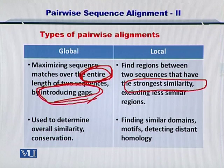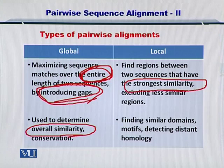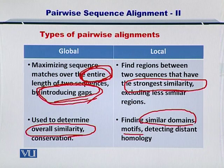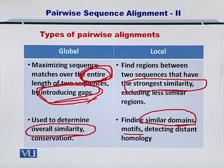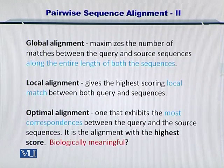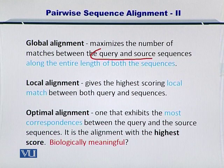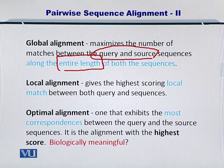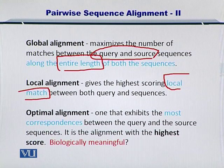In the global pairwise sequence alignment, you are trying to compare the full sequences against each other, so you determine the overall similarity. While in the local pairwise sequence alignment, you only find similar domains or portions such as motifs between two sequences. Local alignment helps you identify portions within the sequences which are very similar, while global pairwise sequence alignment allows you to compare two sequences in their entirety. The global alignment maximizes the number of matches between the query and the source along the entire length, while the local alignment gives a score to the local match between the query and source sequence.